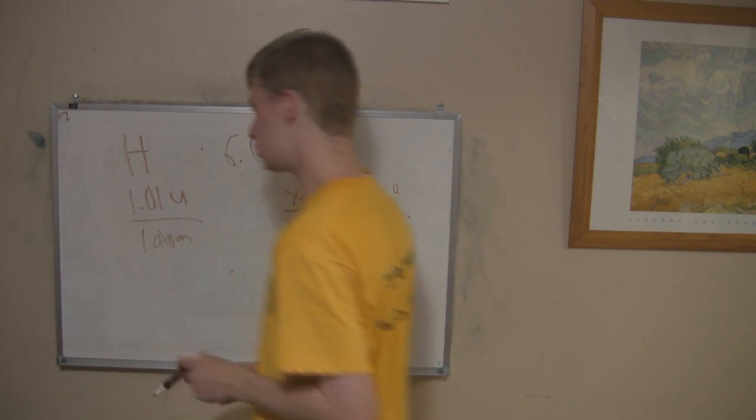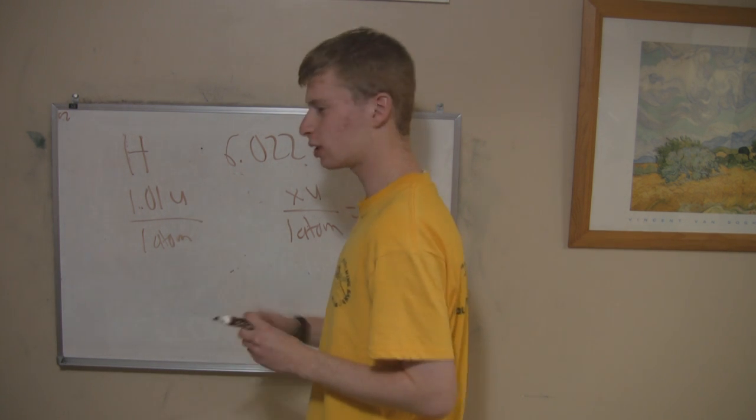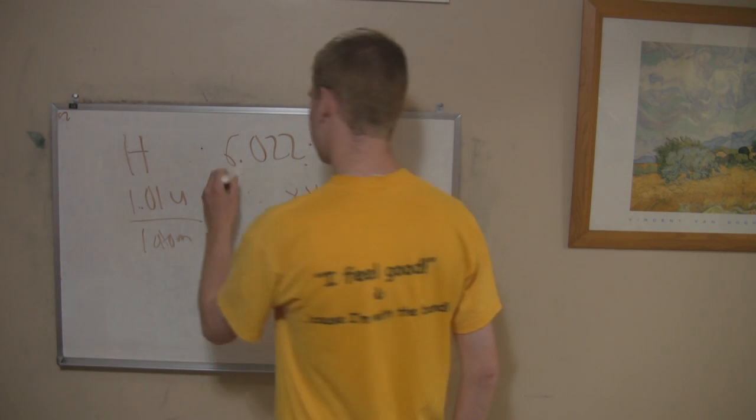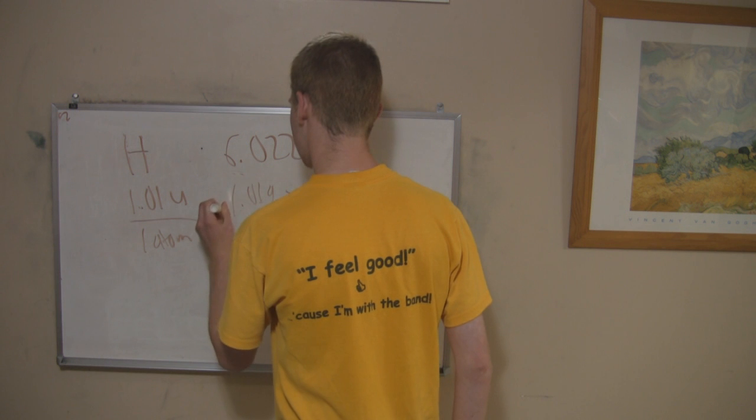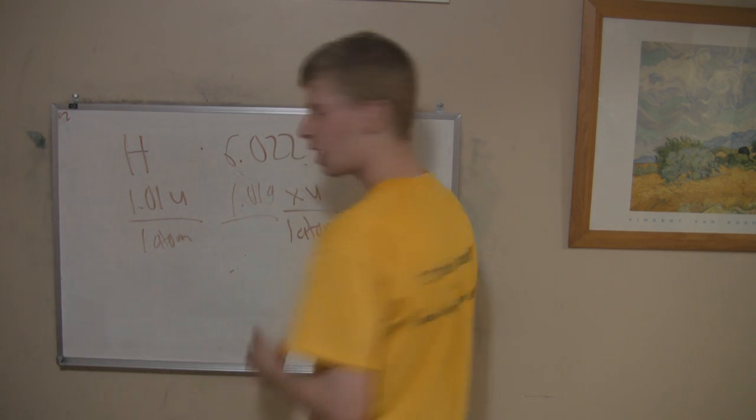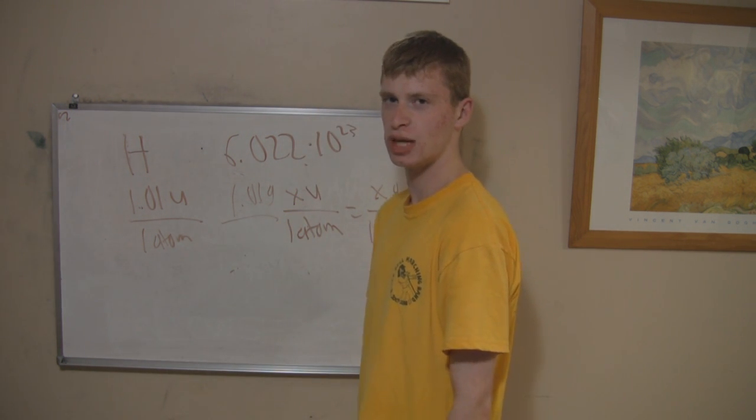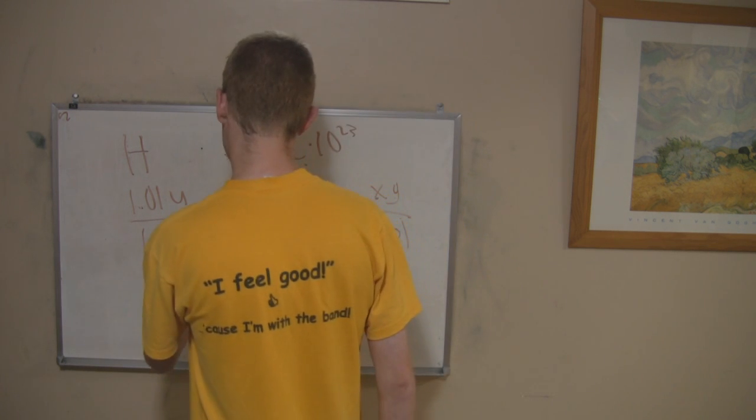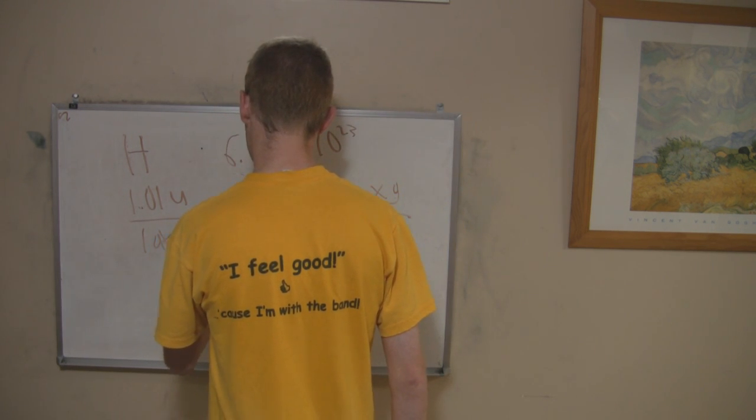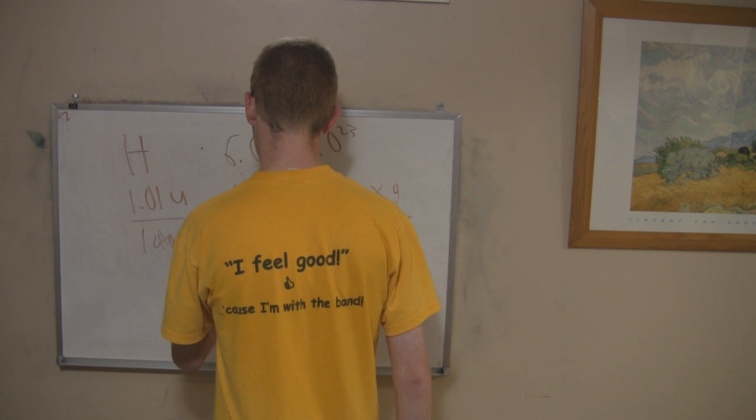That's not really going to help you because you're usually going to have more than 1.01 atomic mass units. So say you have 1.01 grams of hydrogen, which is more realistic. How many atoms are you going to have? Josh? 6.022 times 10 to the 23rd atoms. Correct. You're going to have 6.022 times 10 to the 23rd atoms, or 1 mole.